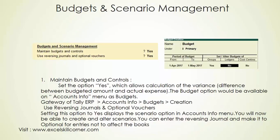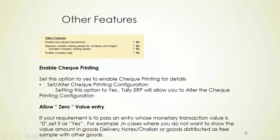For example, we have a sales promotion of 1,000 rupees. We are going to enable the budget and scenario manager. We are also going to enable the reverse entry in general, and enable other features as needed.